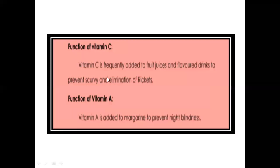A number of natural products are also added to food to prevent deficiency diseases. For example, vitamin C is frequently added to fruit juices and flavored drinks to prevent scurvy. Similarly, vitamin A is added to margarine to prevent night blindness, because deficiency of vitamin A causes night blindness, deficiency of vitamin C causes scurvy, and rickets is caused by the deficiency of vitamin D. These vitamins are frequently added to food to prevent people from these problems.